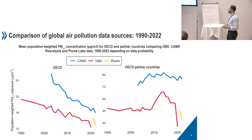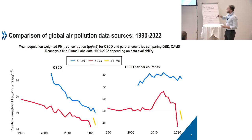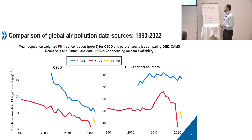Looking at all three datasets, the Plumelabs data only covers 2021 and 2022, which is why it appears as a short yellow stripe. For OECD and OECD partner country aggregates, we see a steady decline in the Global Burden of Disease data for fine particulate matter, while the CAMS re-analysis shows a higher population-weighted exposure over time. The Plumelabs data is actually more closely aligned to the Global Burden of Disease data than to CAMS re-analysis. This illustrates the challenge: the same indicators produced with different data give different results.